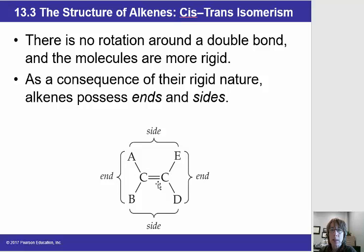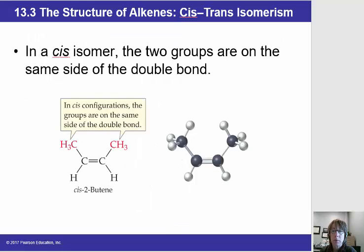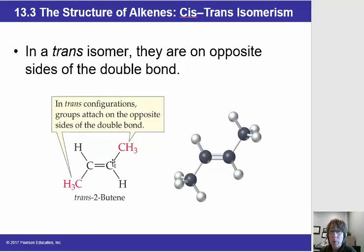Looking at the double bond, we consider the sides — above and below the double bond — and the ends. Substituents on the ends are bonded to the same carbon, while substituents on the sides are above and below the double bond. Because of this lack of rotation, we sometimes have an isomerism known as cis or trans. In the cis conformation, two groups are on the same side of the double bond.